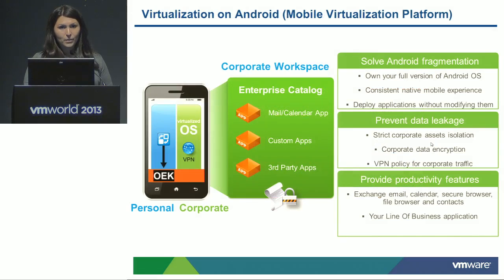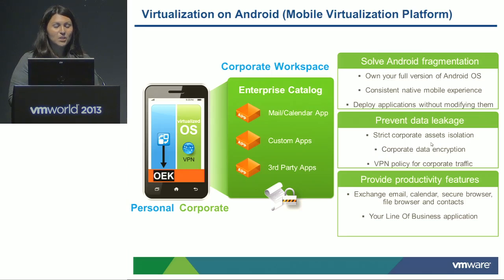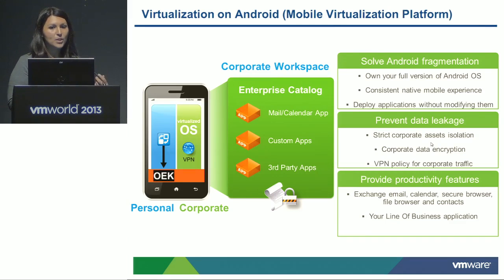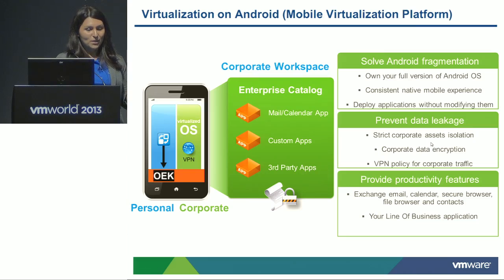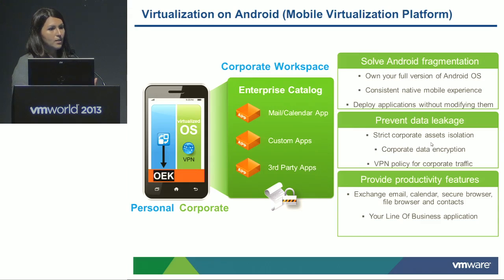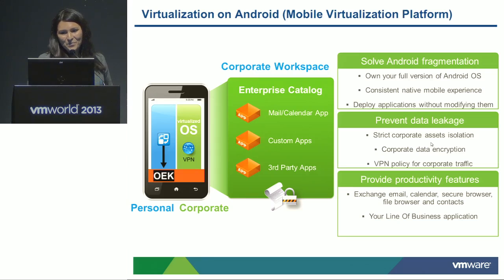With Horizon Workspace 1.5 we introduced the Android Horizon Switch, or Mobile Virtualization Platform. Certain devices are now VMware-ready, and if you have this component enabled in Workspace you can enroll Android phones into your environment and have two separate Android environments — your personal and your virtual corporate. You can push out Android applications exactly as they are, with everything separate on the device — it is an actual virtualized Android experience. We support the latest version of Android, which is Jellybean 4.2. Everything on the phone is a native experience and the OpenGL drivers are virtualized.